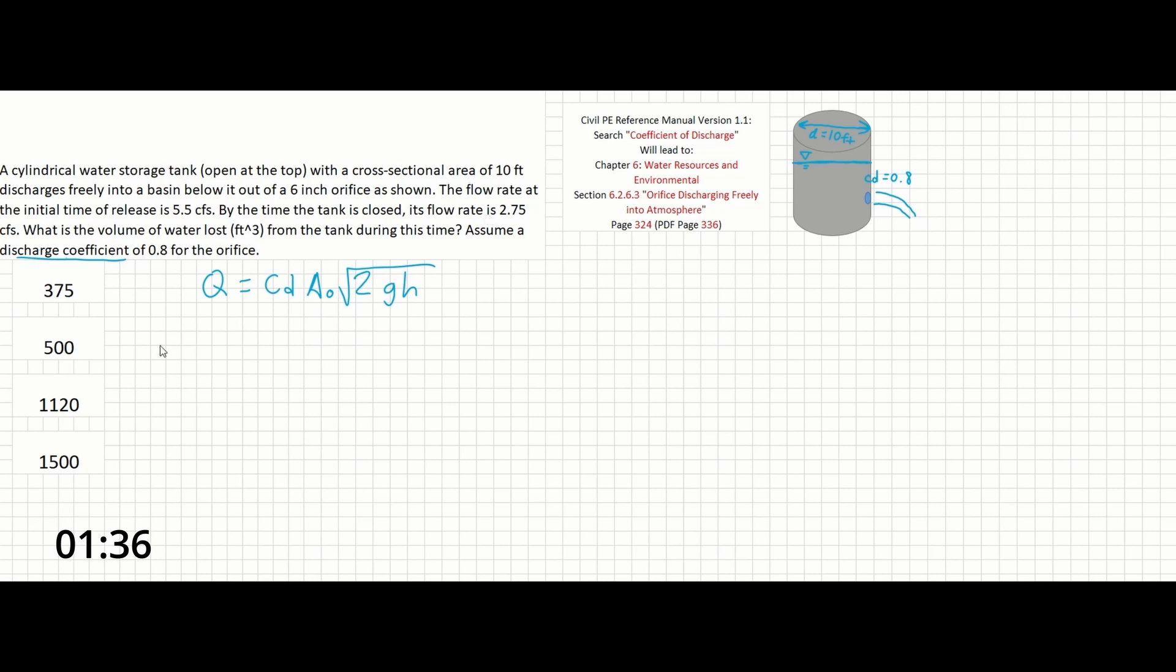First thing we're going to do is solve for the height of the tank at the initial discharge. So 5.5 cubic feet per second equals C_D equals 0.8. The area of the orifice we should solve for...